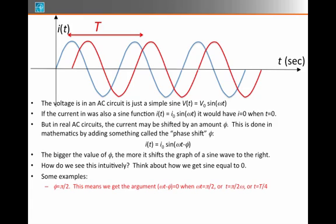Here's some examples. If φ is π/2, that means that you get the argument to the sine function to be zero when ωt - φ is zero, or ωt is π/2, or that happens when the time t is π/(2ω). Or remember what ω is, it's 2π times the frequency. That means you get it at a time t equals period over four. So that's what it takes to get the sine function to be zero. You have to go over here to a time of one period over four. And so that's why we say it's shifted over to the right.